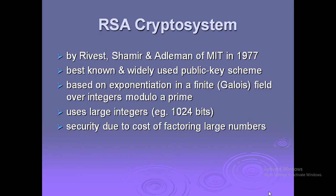The RSA cryptosystem was developed by three persons in 1977. It is the best known and widely used public key scheme, based on exponentiation in a finite field over integers modulo a prime. It uses large integers of size 1024 bits, and its security is due to the cost of factoring large numbers.